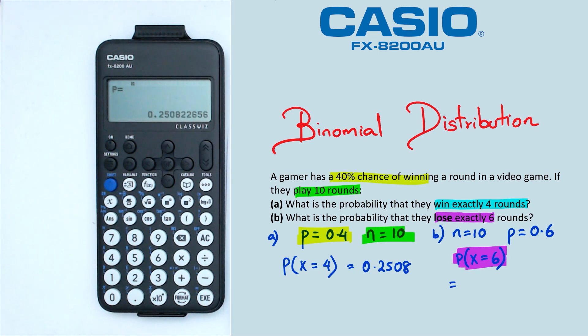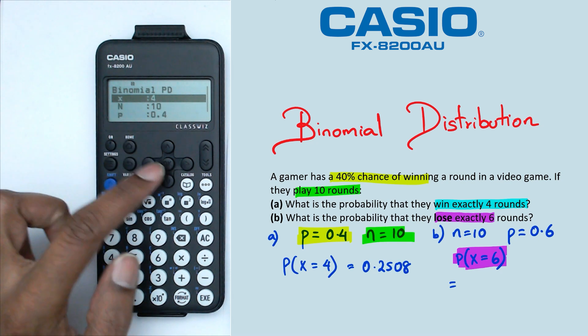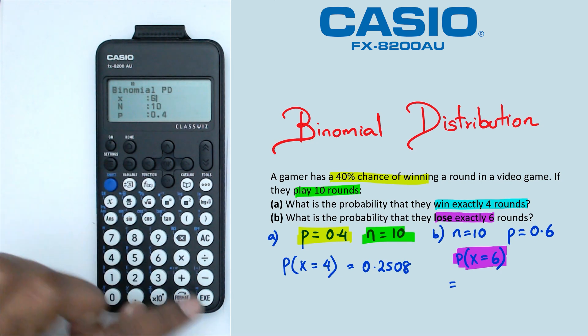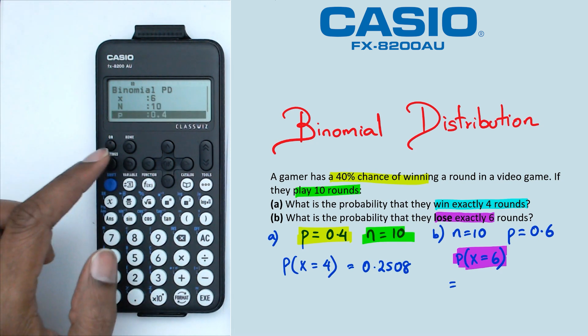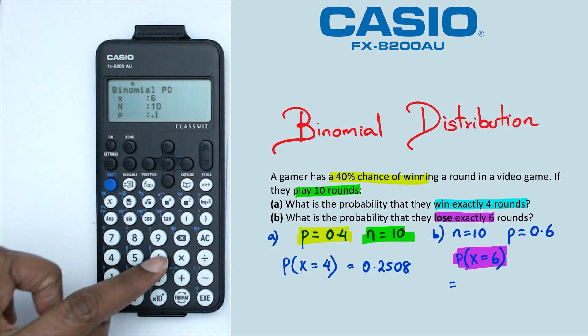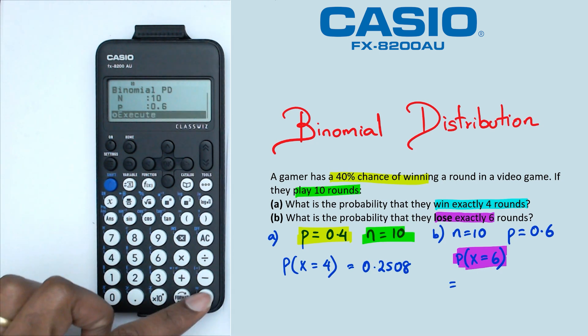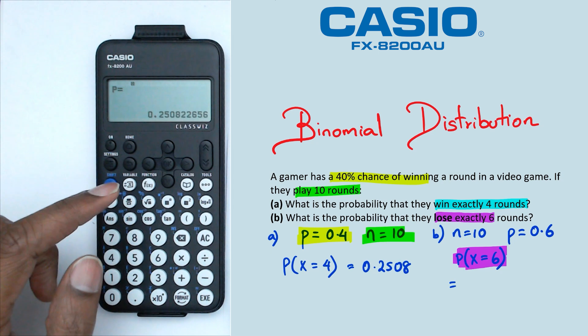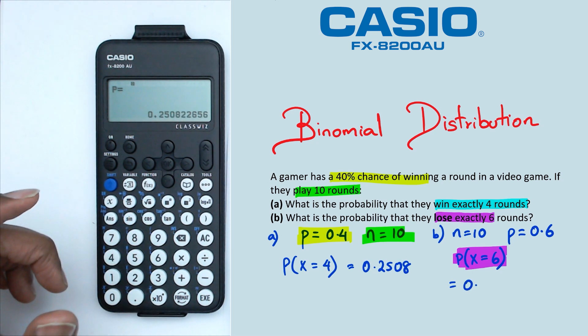So going back to the calculator, we're going to do this again, but this time, X is equal to 6. And remember that the probability of winning was 0.4. So the probability of losing is going to be 0.6. So we're going to click on 0.6. And we should get the same probability as question A, because both of these questions are asking the same thing. So we're going to get probability of 0.2508.